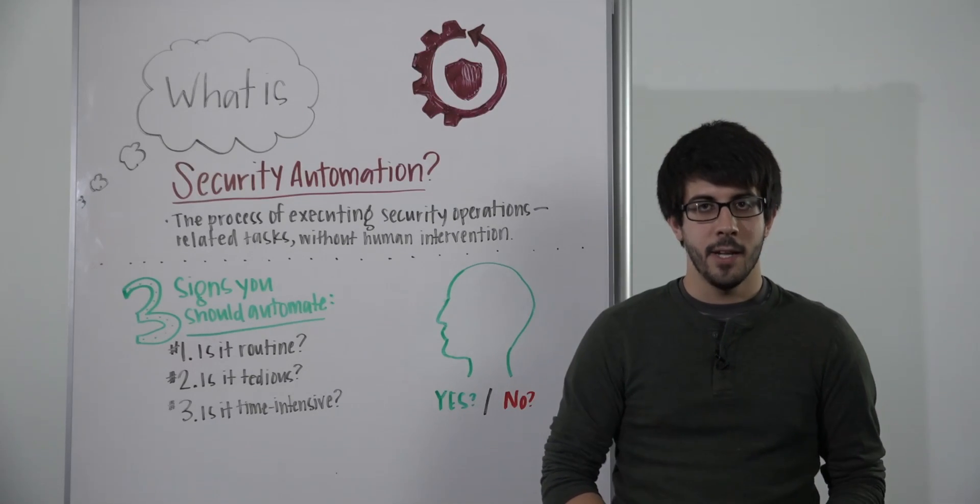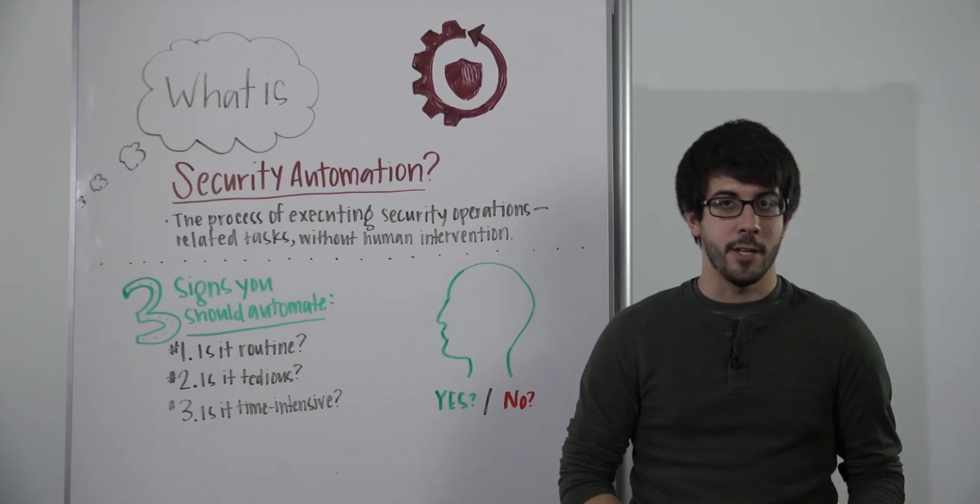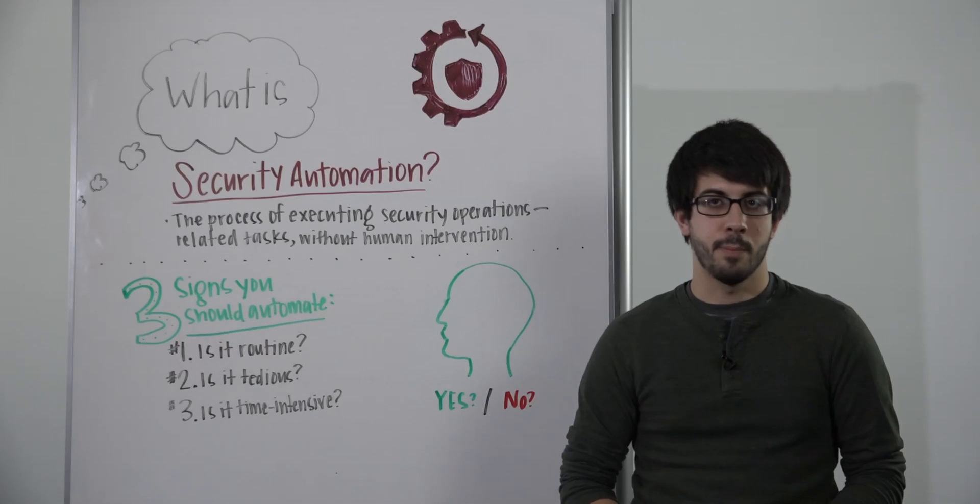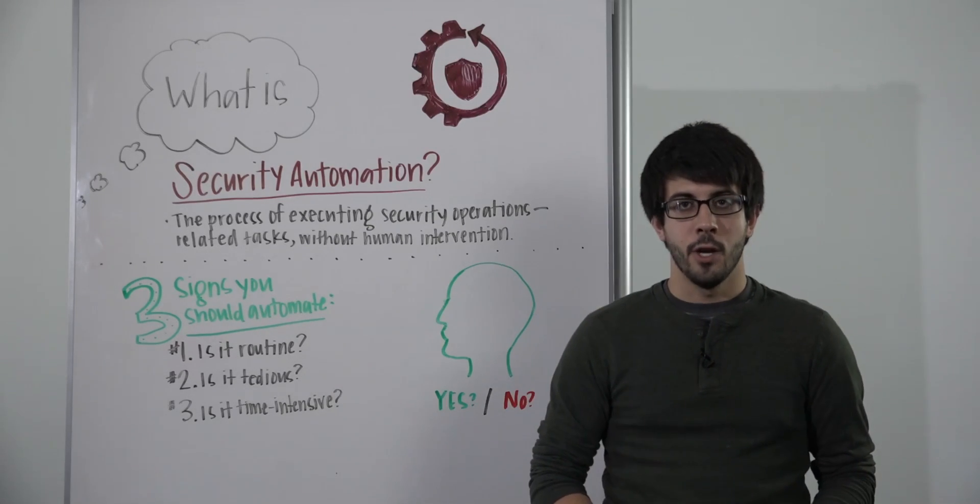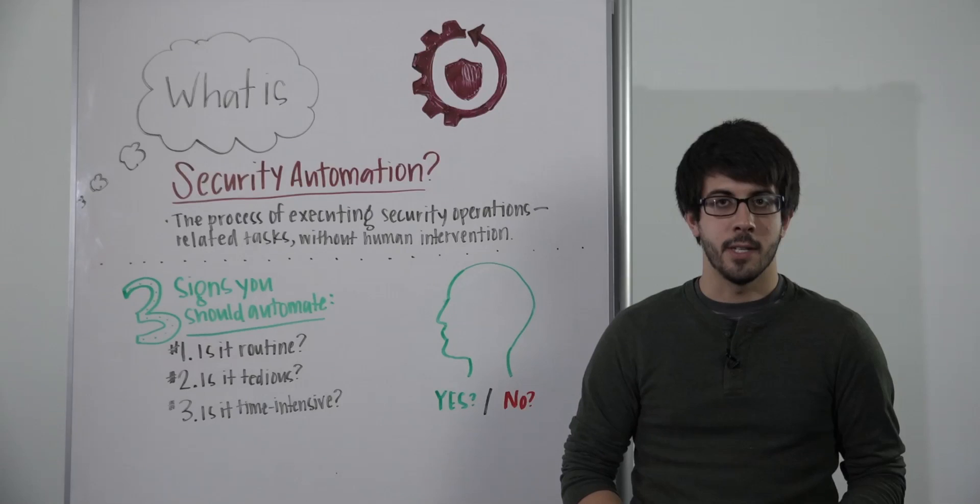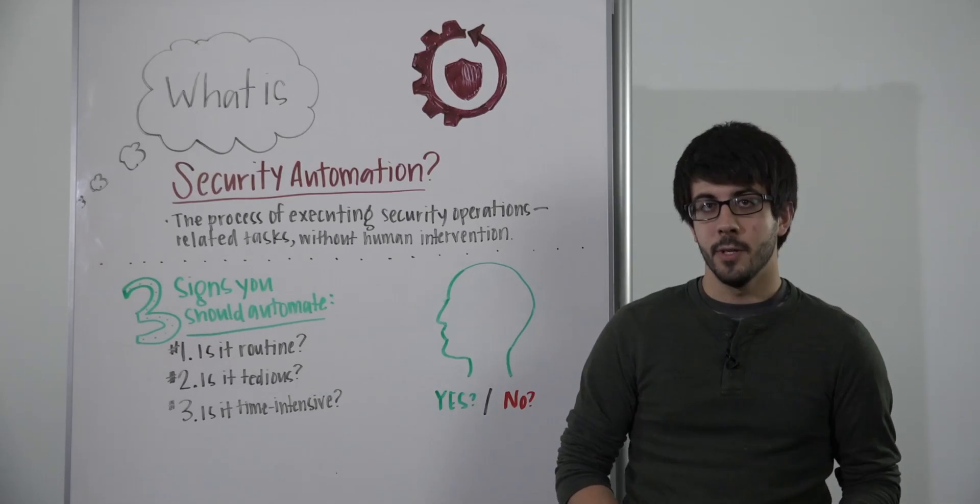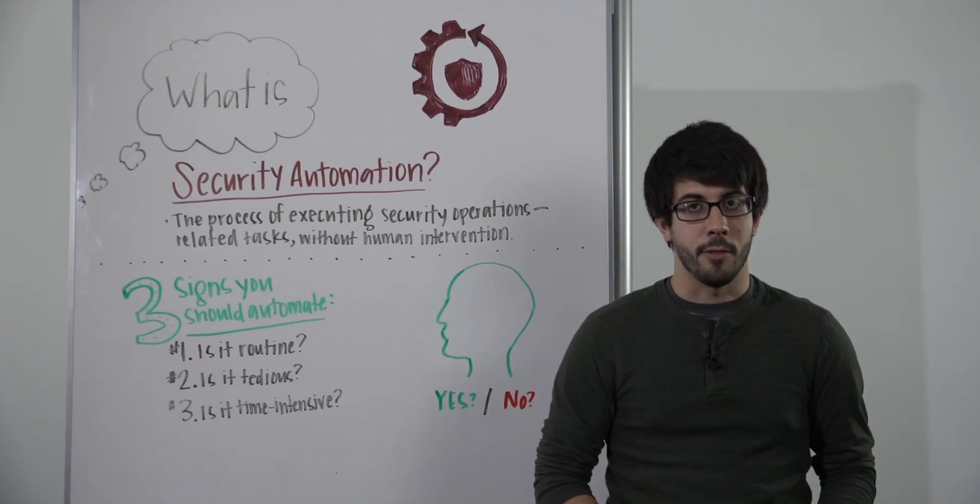On the defensive side, it covers everything from prevention and detection to response or remediation. On the offensive side, red teams and attackers can utilize automation to perform vulnerability assessments or gain a leg up on their targets.